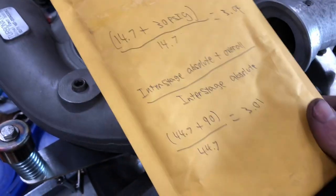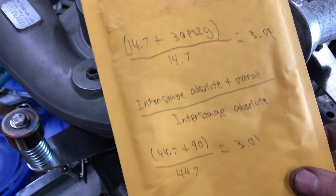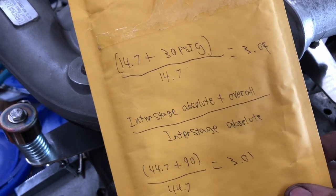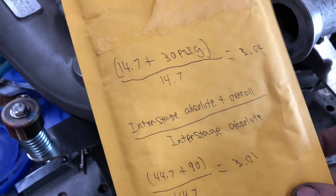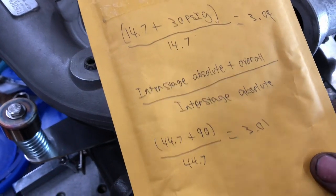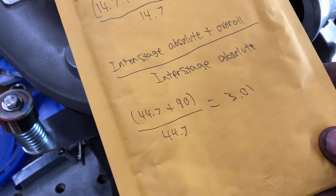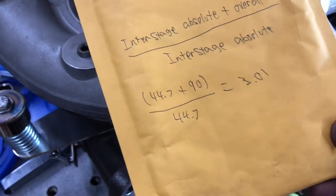So I thought I'd do compound, right? 14.7, that's the normal pressure ratio, so if we add 30 PSIG measure to be 14.7 plus 30 divided by 14.7, so 44.7, 3.04, and for compounds, it's interstage absolute plus overall divided by interstage absolute.